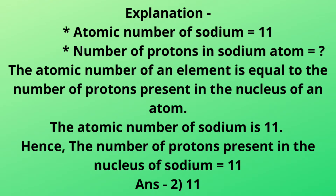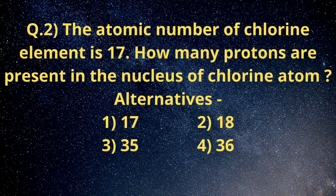We have to find out the number of protons in the nucleus of sodium atom. Students should know that the number of protons present in the nucleus of an atom, or the number of electrons revolving around the nucleus in a specific orbit, is called the atomic number of the element. The atomic number of an element is equal to the number of protons present in the nucleus. The atomic number of sodium is 11, hence the number of protons present in the nucleus of sodium is equal to 11. The answer is alternative number 2 - eleven.